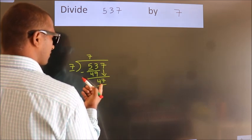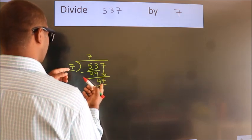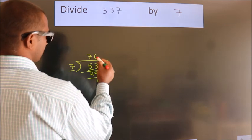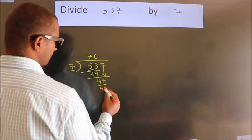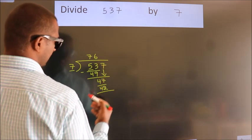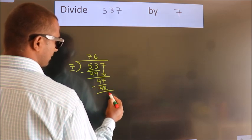A number close to 47 in 7 table is 7 times 6 equals 42. Now, we should subtract. We get 5.